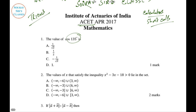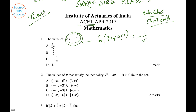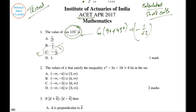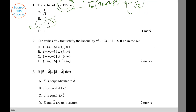Question 1: cos 135. The old-school approach uses cos(90+45) and the formula cos A cos B minus sin A sin B. But here we can just put it in the calculator — it gives minus 1 by root 2. Option C is correct.